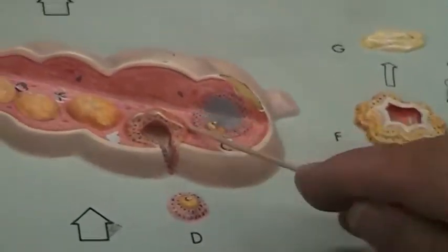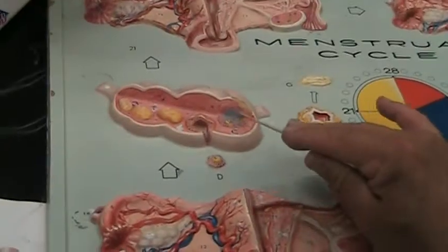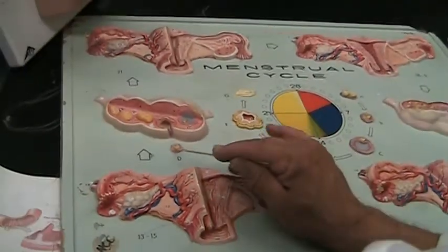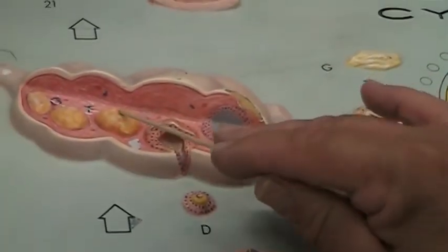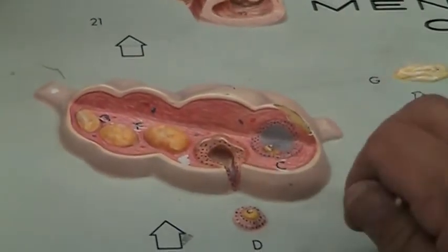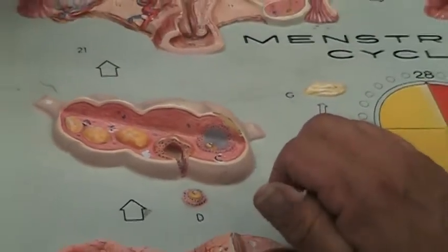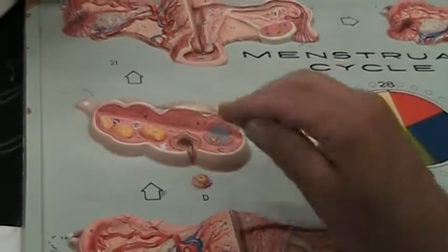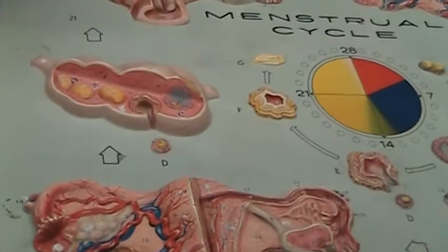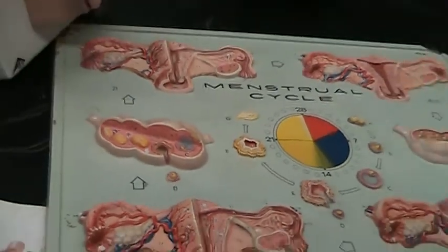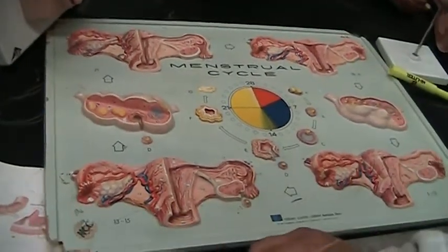So on this particular diagram, here is the Graafian follicle, there you have ovulation, there you have the conversion into this yellow structure called the corpus luteum, yellow body, here it is shriveling up into the corpus albicans. So there you have this particular cycle.